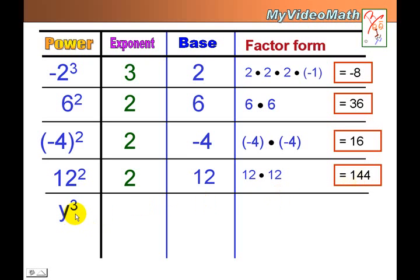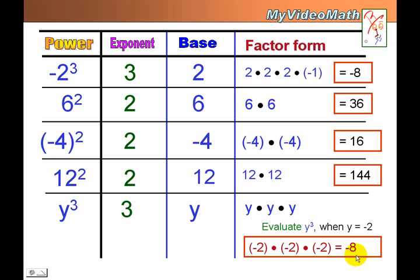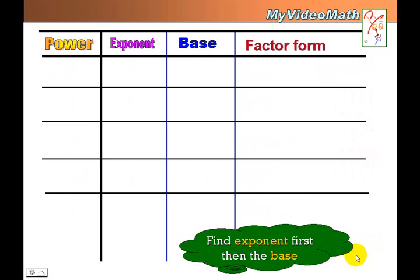y cubed: identify the exponent, the base, and the factor form. If y is negative 2, we want to evaluate y to the third power. The exponent is 3 and the base is y. Remember: find the exponent first, then the base.